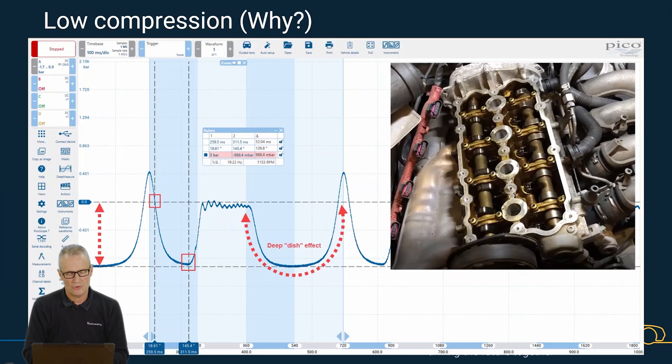Let's grab more information. Look how deep our expansion pocket is—almost negative one bar, an immense negative pressure. The exhaust valve is opening in the correct position at 145 degrees before bottom dead center, because pressure rises to atmospheric. We don't have a blocked exhaust or back pressure, which is great.